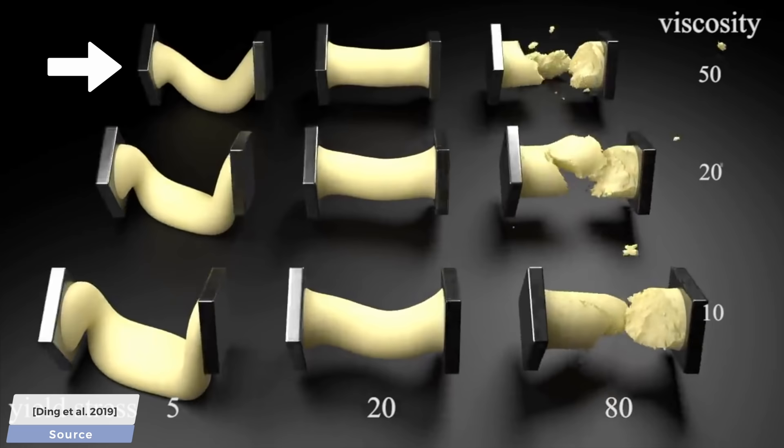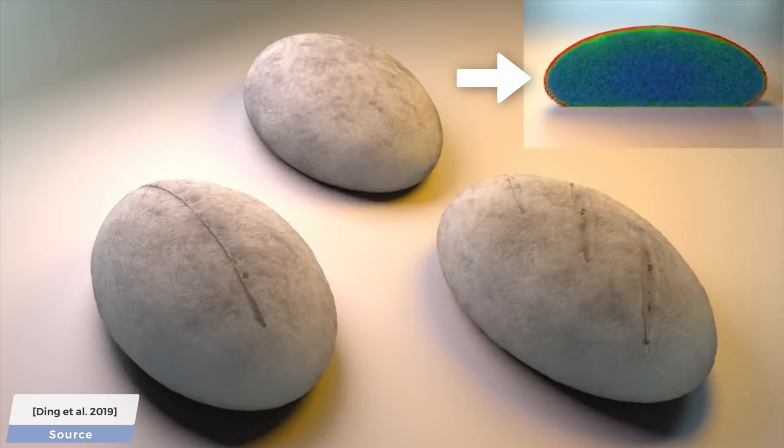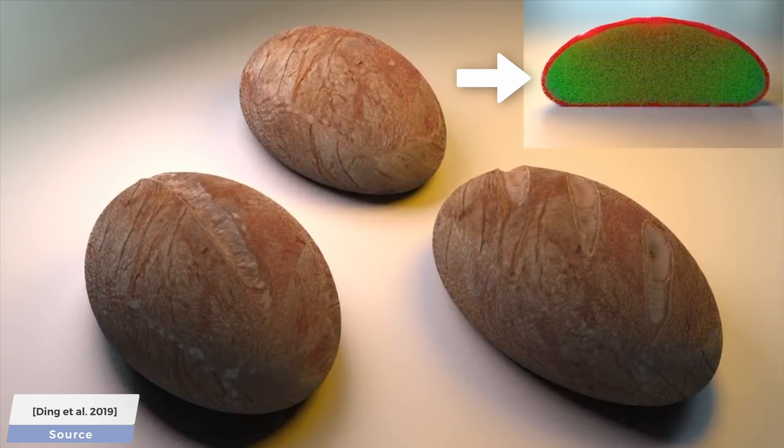Here you can see a cross section of the bread, which shows the amount of heat everywhere. This not only teaches us why crust forms on the outside layer, but you can see how the amount of heat diffuses slowly into the inside.